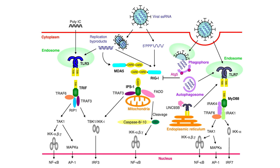When TLR7 detects viral products, it attaches to MyD88, which forms a complex with IRAK4, IRAK1, and TRAF6, again resulting in formation of type 1 interferon and NF-κB. Apart from these endosomal receptors, there are cytosolic receptors — MDA5 and RIG-I — which can also detect viral replication products.